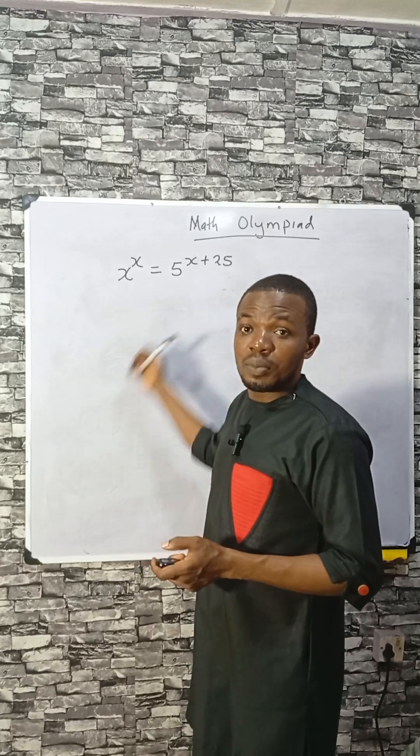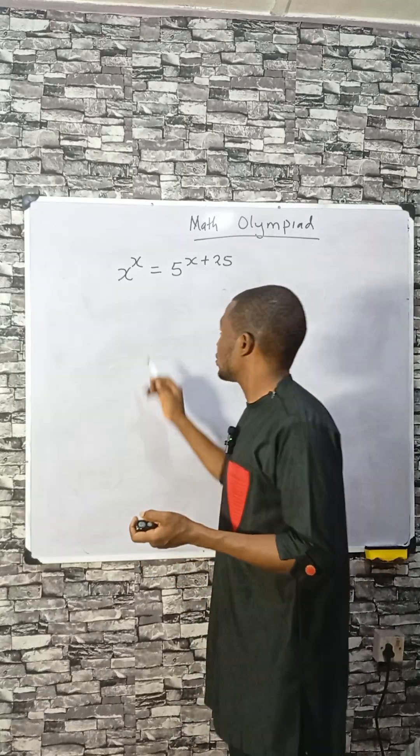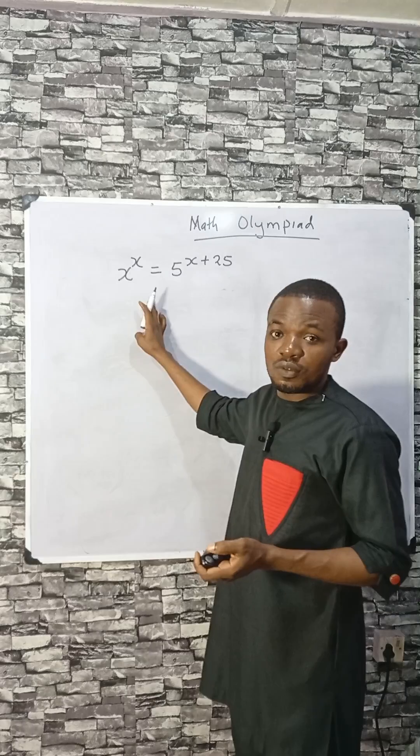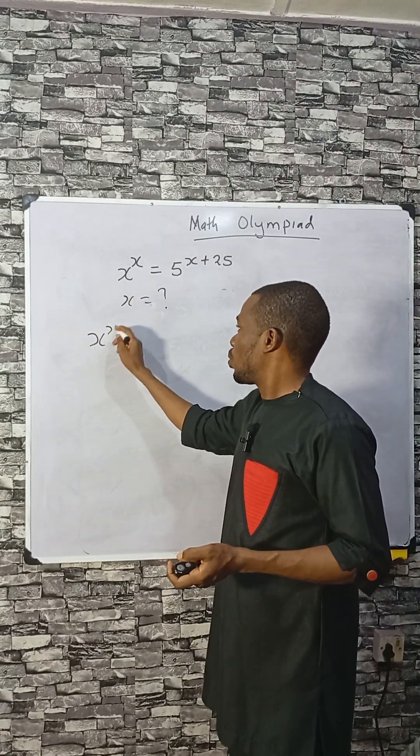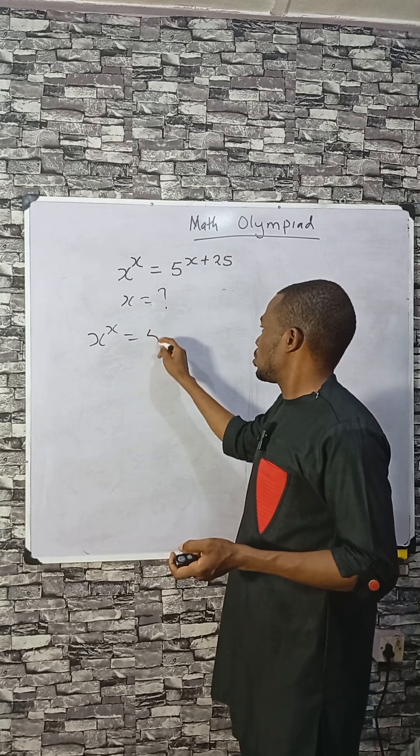Let's solve the Olympiad math question on the board. What is the value of x here? So x equals... Now we can split this into this.